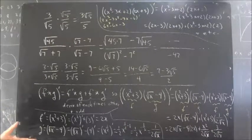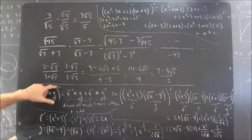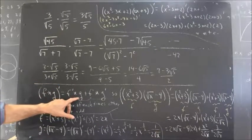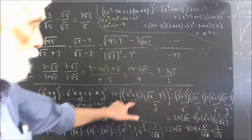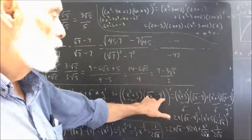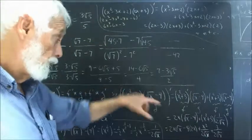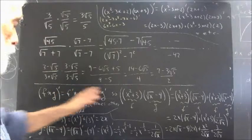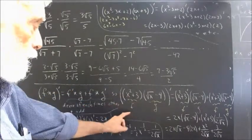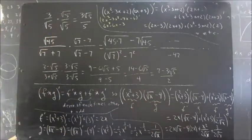As was given in the problem, the derivative of f times g — the product function f times g — is equal to f prime times g plus f times g prime. So, the derivative of x squared plus 3 multiplied by the square root of x minus 4. We identify x squared plus 3 as our f function and the square root of x minus 4 as our g function, and then we simply apply the rule.